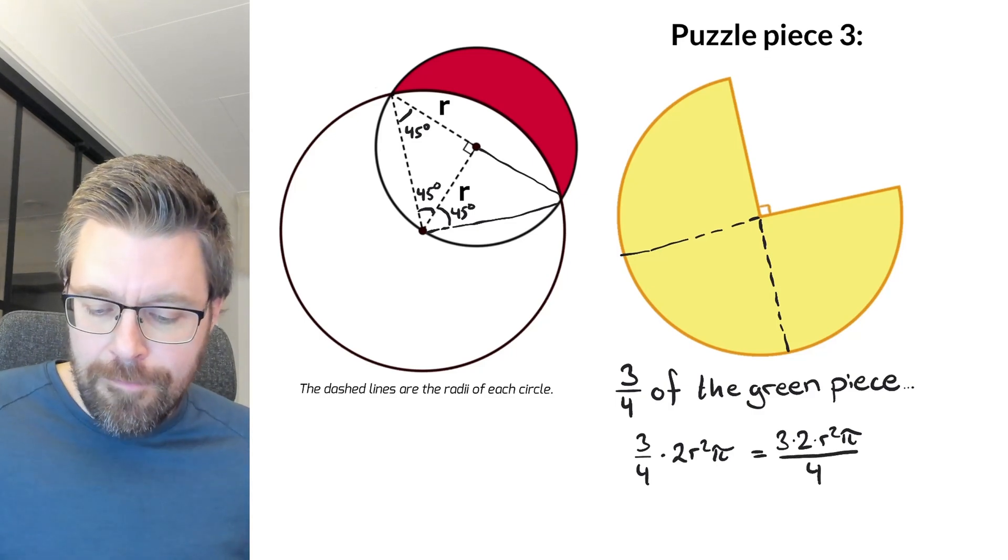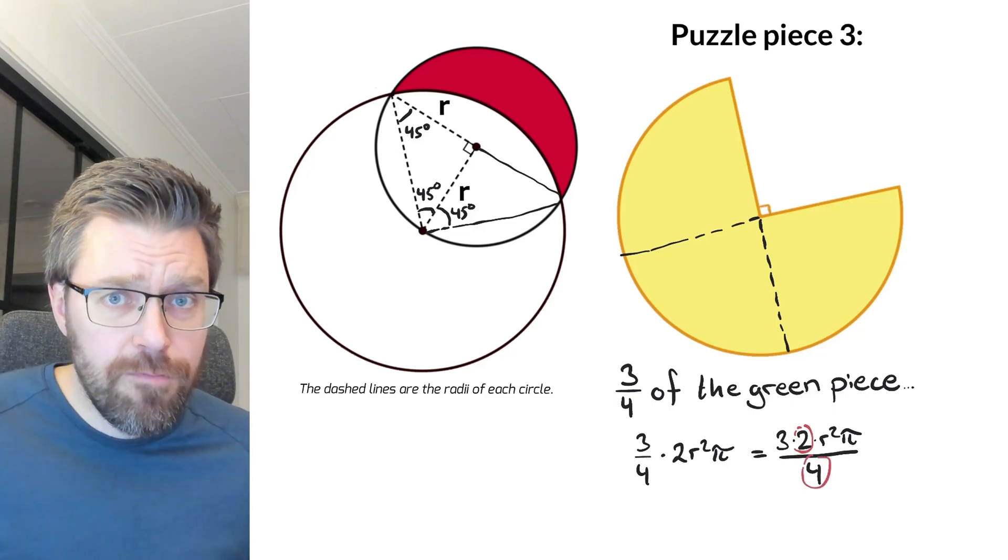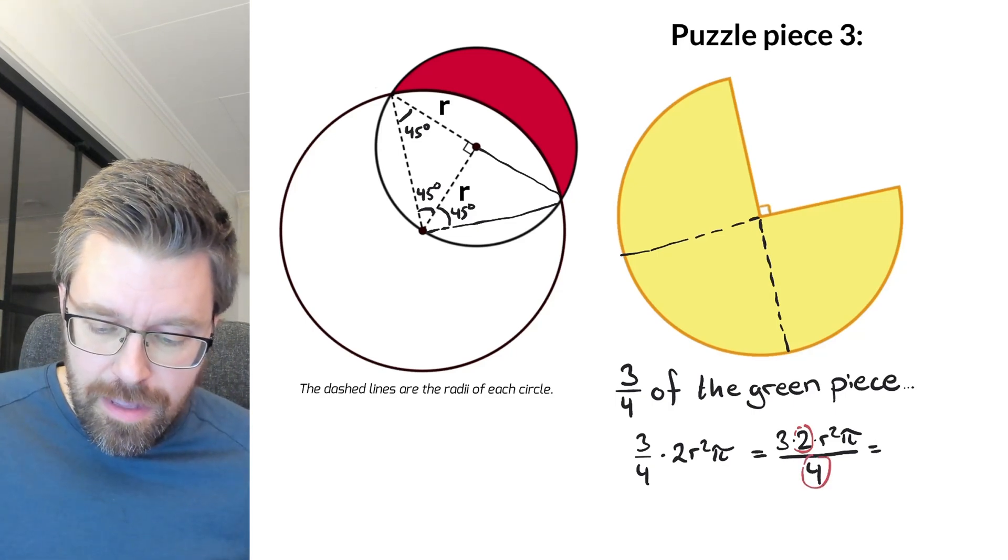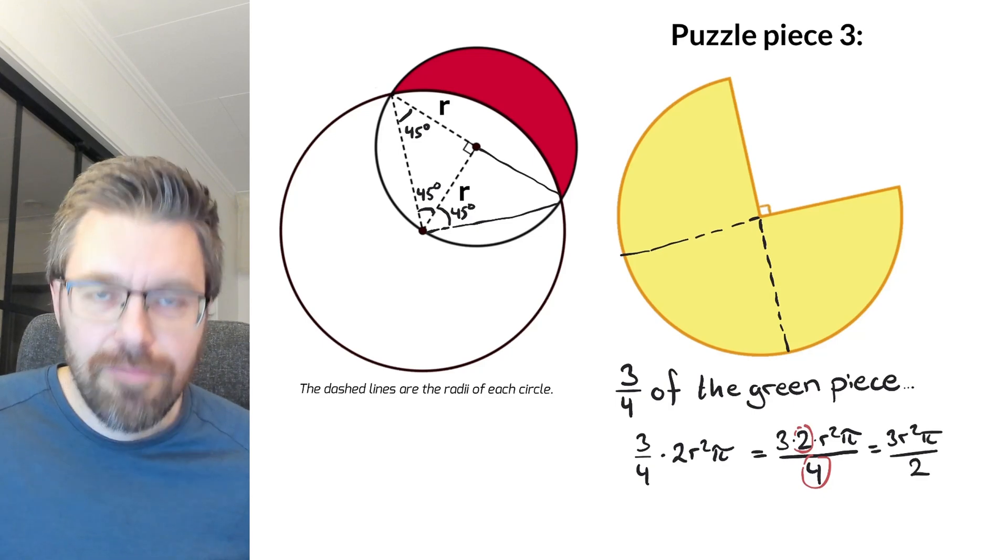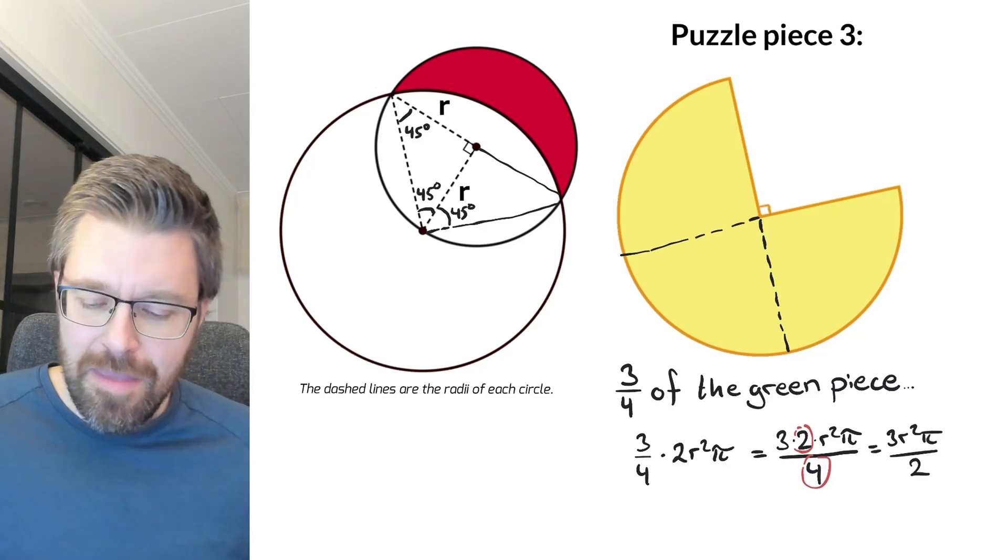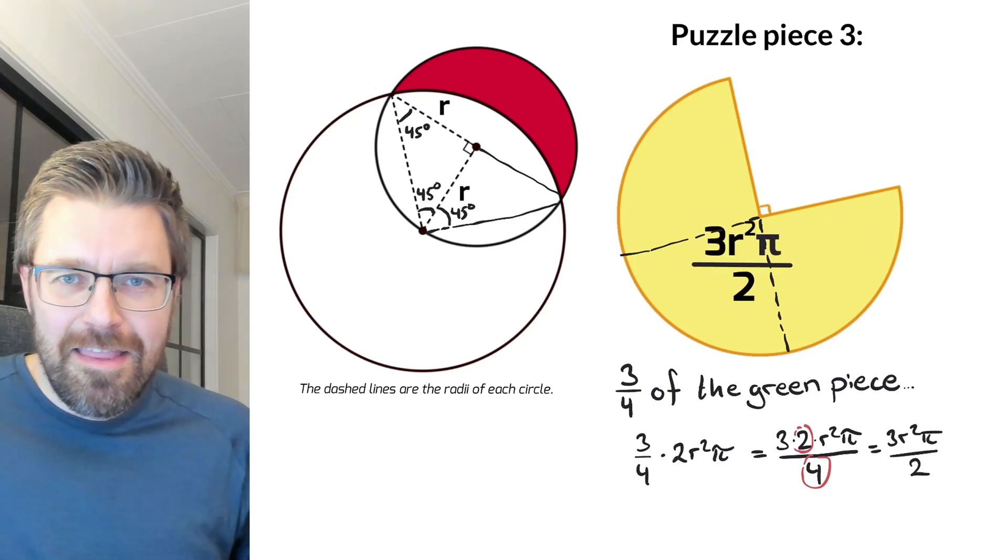And I write it like three times two r squared pi up here and then divide it by four here. And if I take two and four and divide both with two, I got this three r squared pi divided by two. Okay, so we can write this one in the yellow piece.